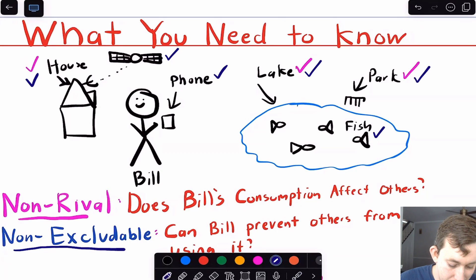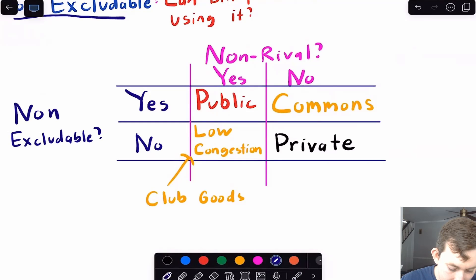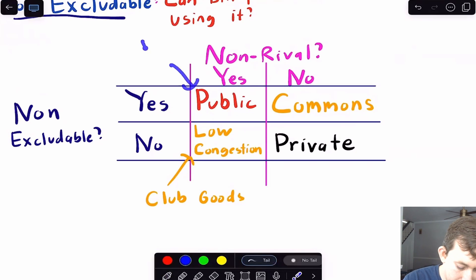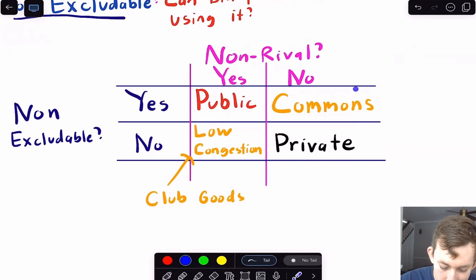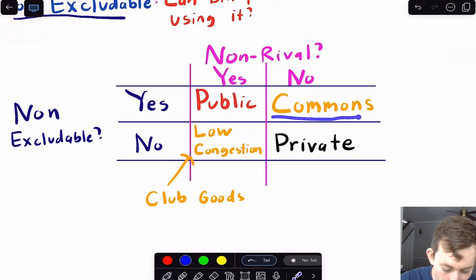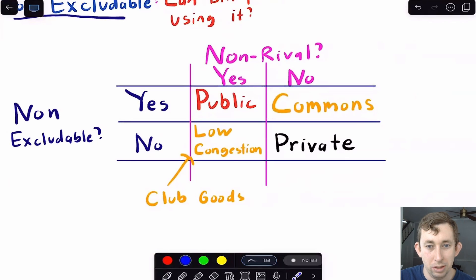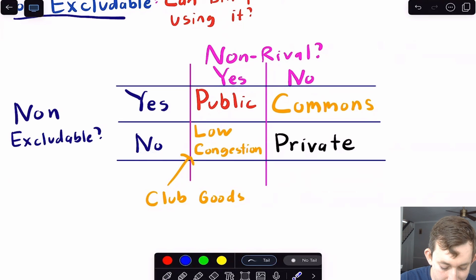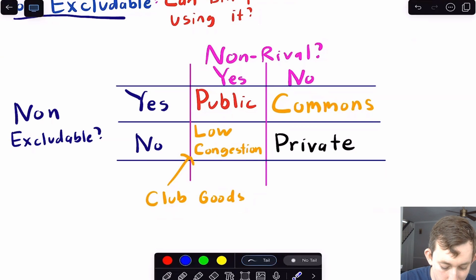So let's clarify these into four categories. If you're both non-excludable and non-rival, then you are a public good — like the park or the lake. If it's non-excludable but rival, this is like the fish, because if I take the fish out, someone else can't take that fish. That's called a common resource, and there's a whole problem called the tragedy of the commons, where people tend to use too much of a common resource. If it is excludable but non-rival, this is like satellite TV or satellite radio — it's called a club good or a low-congestion good, something you have to subscribe for. And if it's excludable and rival, like your house or your phone, it's going to be a private good.